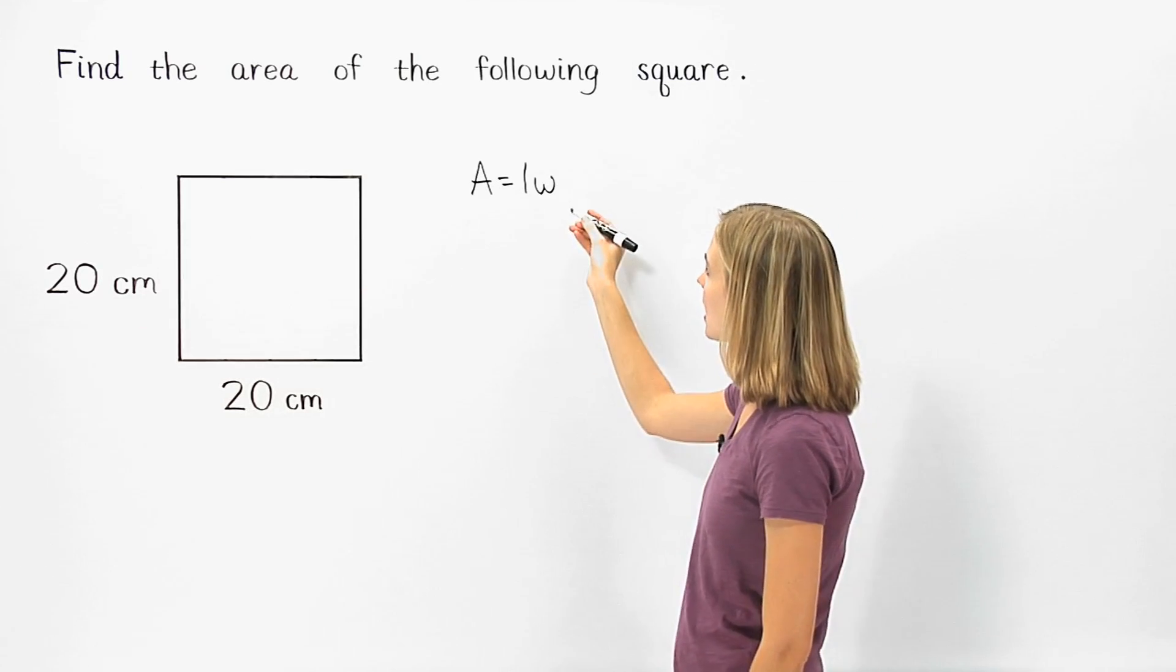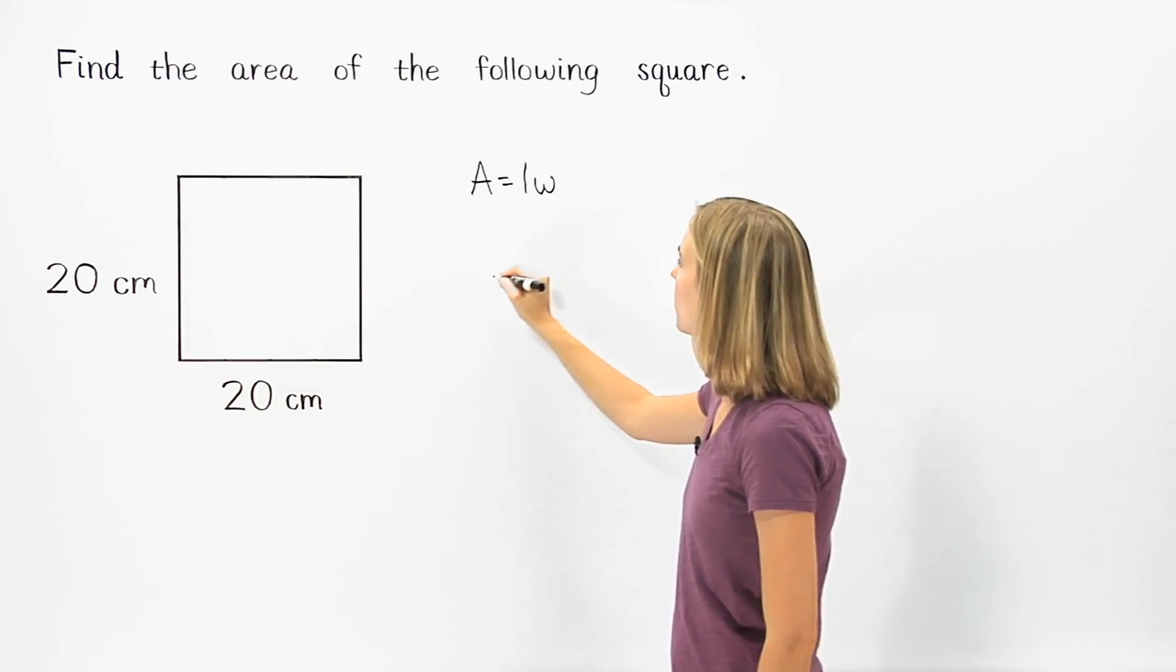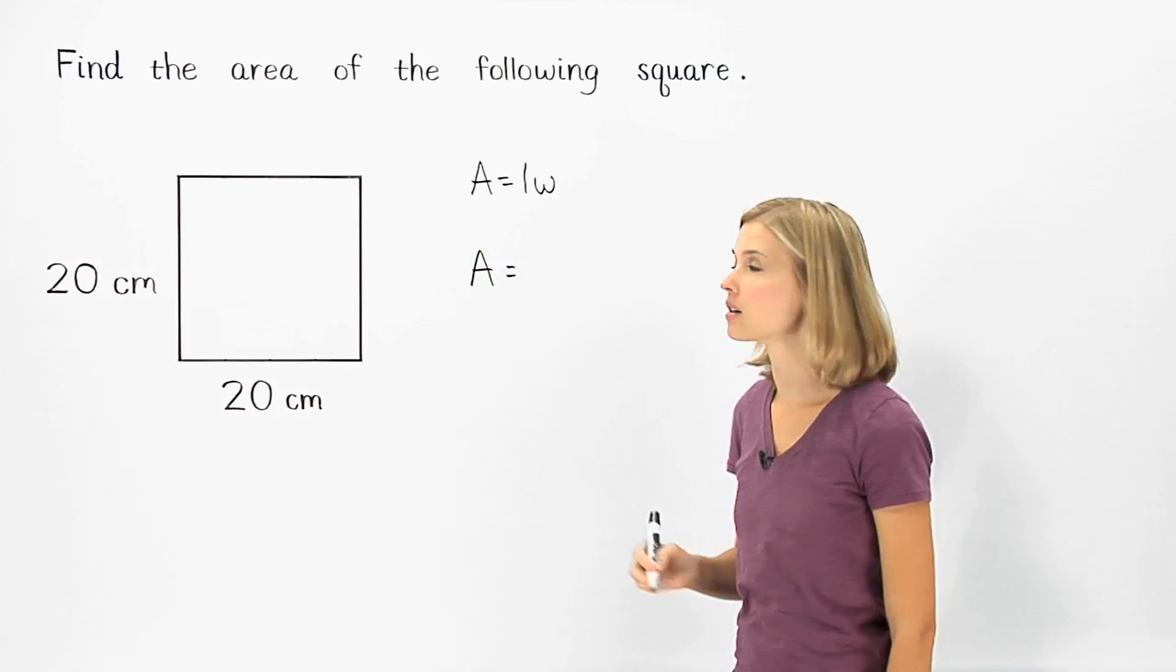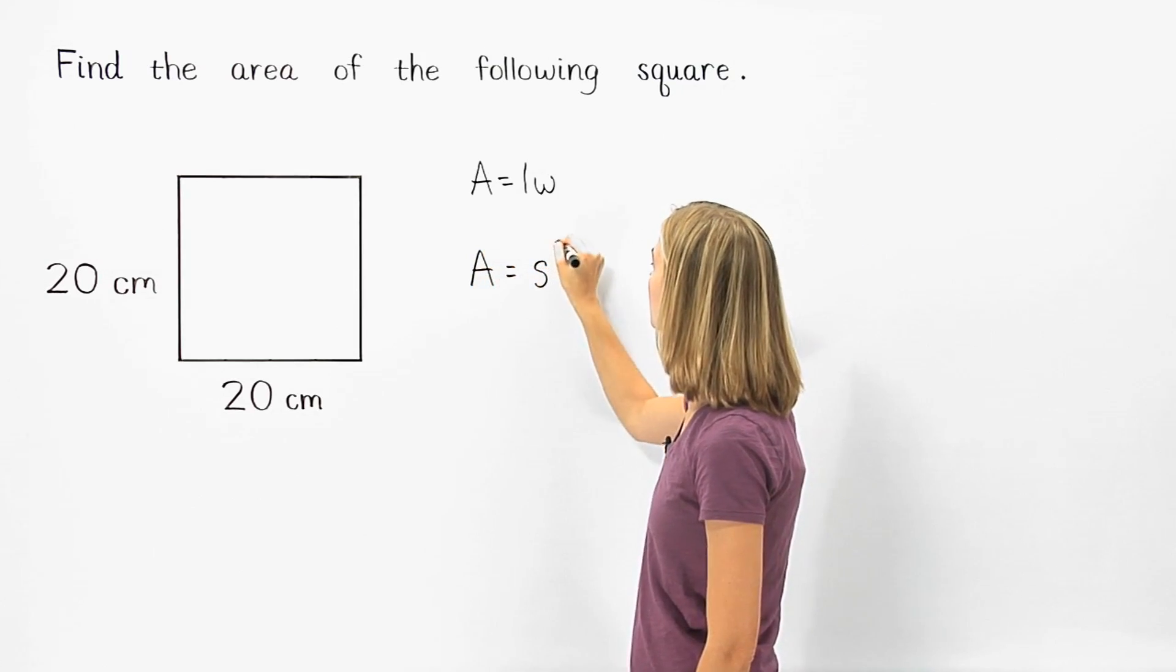Instead of area equals length times width, we say that the area of a square equals side times side, or side squared.